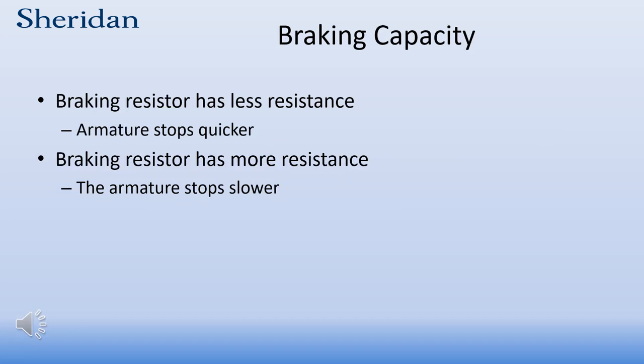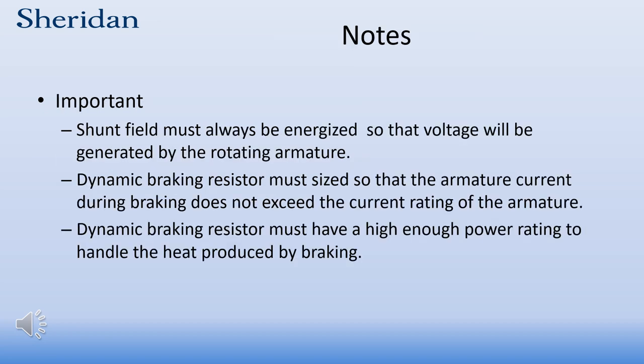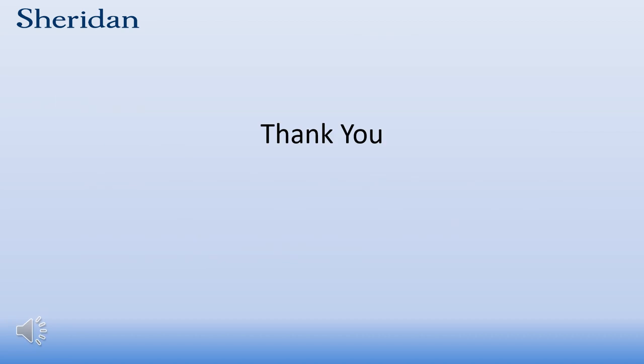When it comes to braking capacity, the value of resistance is important. If the resistor has less resistance, more current will flow and the motor will stop quicker. If it has greater resistance, there will be less current and the motor will take longer to stop. Important notes: the shunt field must always be energized during braking to produce an armature voltage; the resistor must have a high enough resistance value so that too much current does not flow through the armature; and the resistor must have a high enough power rating to handle the heat produced by braking. Thank you for watching this Sheridan College presentation on dynamic braking.